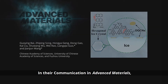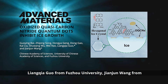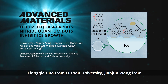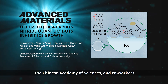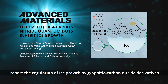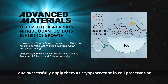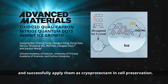In their communication in Advanced Materials, Liang Cha Guo from Futsu University, Jianzheng Wang from the Chinese Academy of Sciences, and co-workers report the regulation of ice growth by graphitic carbon nitride derivatives and successfully apply them as cryoprotectants in cell preservation.